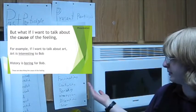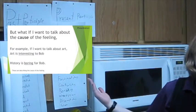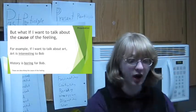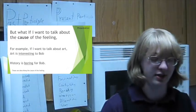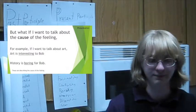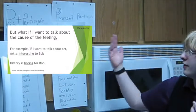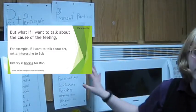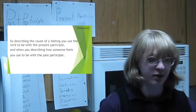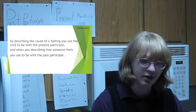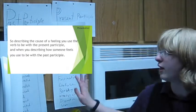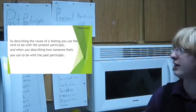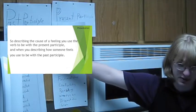Well, the present participle is used to describe what causes the feeling, the cause. Art is interesting. History is boring. It's the item that is important, not the person. So describing the cause of a feeling, you use the present participle. And describing how someone feels about something, you use the past participle.